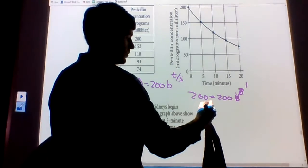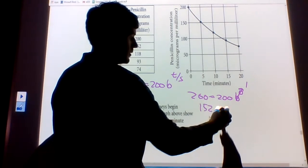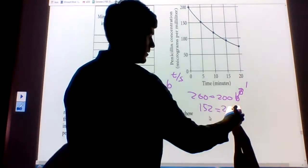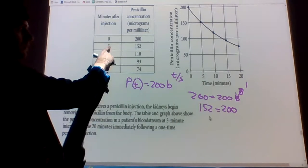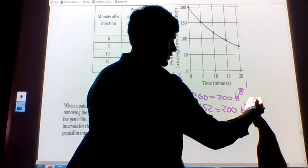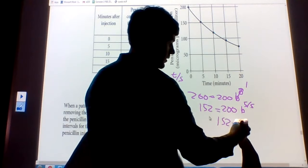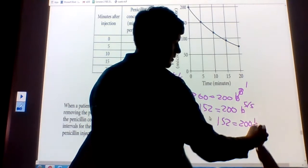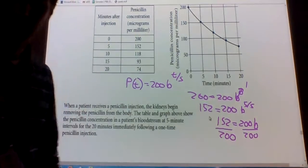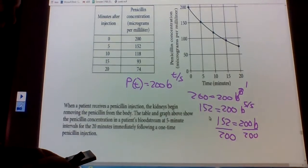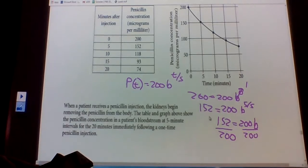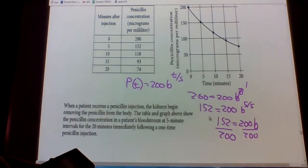So just go to the next one. So 152 equals 200, and then it's B to the 5 over 5. So 5 over 5 is 1. So we have 152 equals 200B. Divide by 200. 200. Okay.